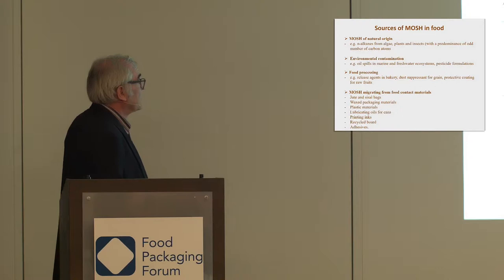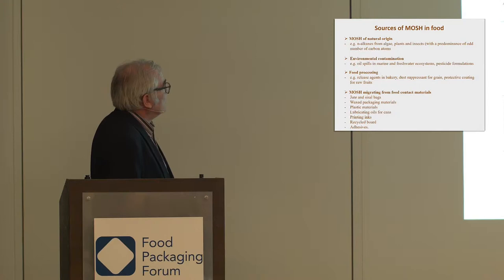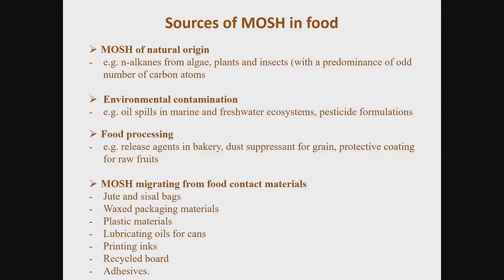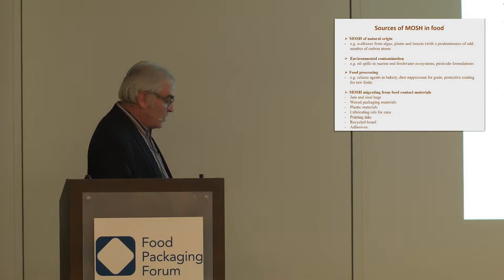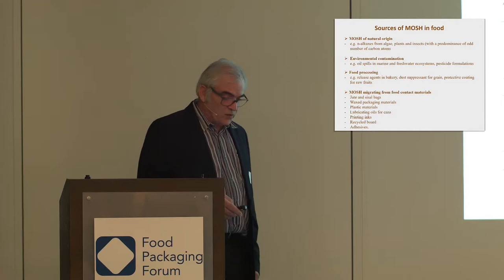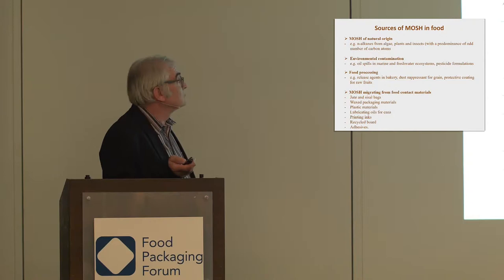The sources of MOSH in food are not only from food contact materials, but also some are of natural origin, others from environmental contamination, and others from food processing. More precisely regarding food contact materials, there are several possible origins: jute and sisal bags can be treated with MOSH, wax packaging materials exist, plastic materials can release MOSH, lubricating oils for cans can be a source, as can printing inks, recycled boards, and adhesives.